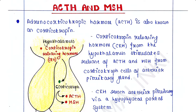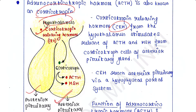ACTH is also known as corticotropin. Corticotropin releasing hormone, or CRH, from the hypothalamus — this is the hypothalamus, this is the anterior pituitary, and here is the posterior pituitary — stimulates release of ACTH and MSH from corticotropin cells of the anterior pituitary gland.